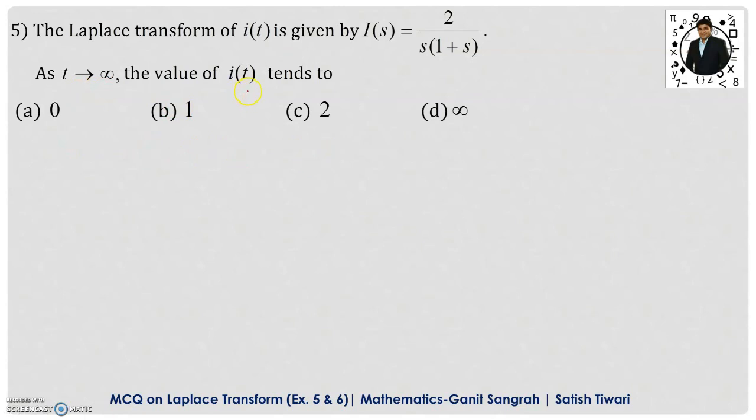Now to find out the value of i(t) when t tends to infinity, first we have to find the inverse Laplace transformation for this I(s). Then we will take t tend to infinity and we will have the value of i(t). Now we have I(s) equals 2 upon s into 1 plus s. We will find out the partial fraction for this fraction. We write 1 upon s minus 1 upon 1 plus s.